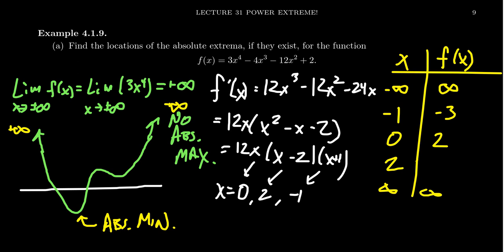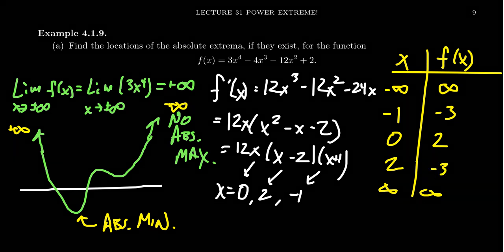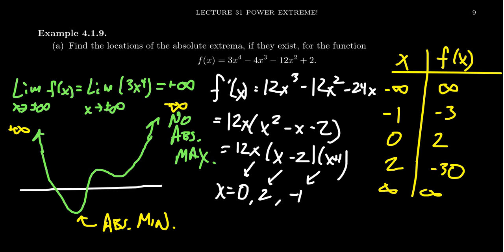And then lastly, we have to do f(2). So f(2), you're going to get 3 times 16, which is 48, minus 2 cubed. 2 to the 4th is 16 times 3 is 48. Then the next one, you get 4 times 2 cubed. 2 cubed is 8 times 4, that's 32. And then the next one, you're going to get negative 12 times 4, so that's 48. So those conveniently cancel out. And then you get a plus 2. So it looks like we get a negative 30 when we're done.